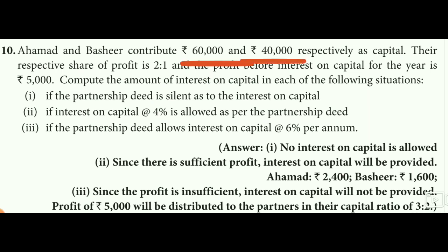Agamath and Bajir contribute 60,000 and 40,000 respectively as capital. So Agamath would have capital 60,000 and Bajir would have capital 40,000. The respective share of profit is 2 is to 1.